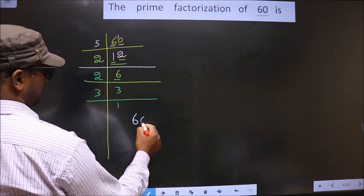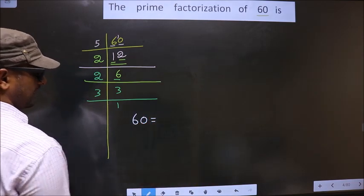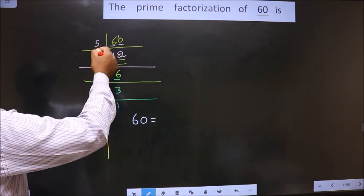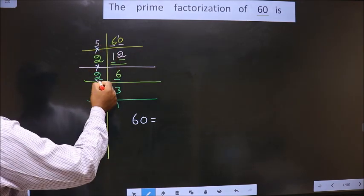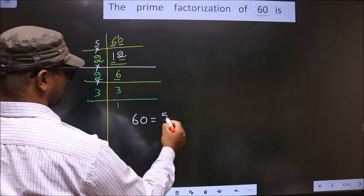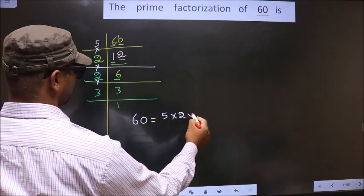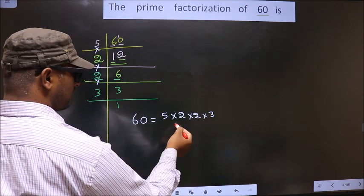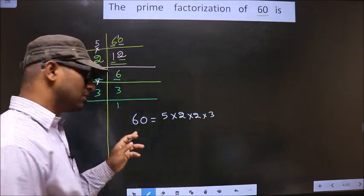So now prime factorization of 60 is equal to the product of these numbers. That is 5 into 2 into 2 into 2 into 3. So this is called prime factorization of 60.